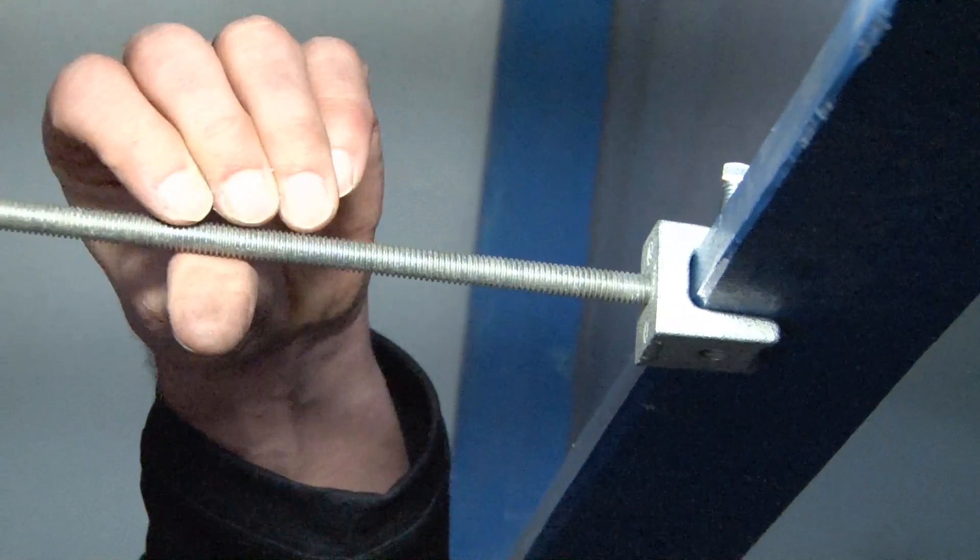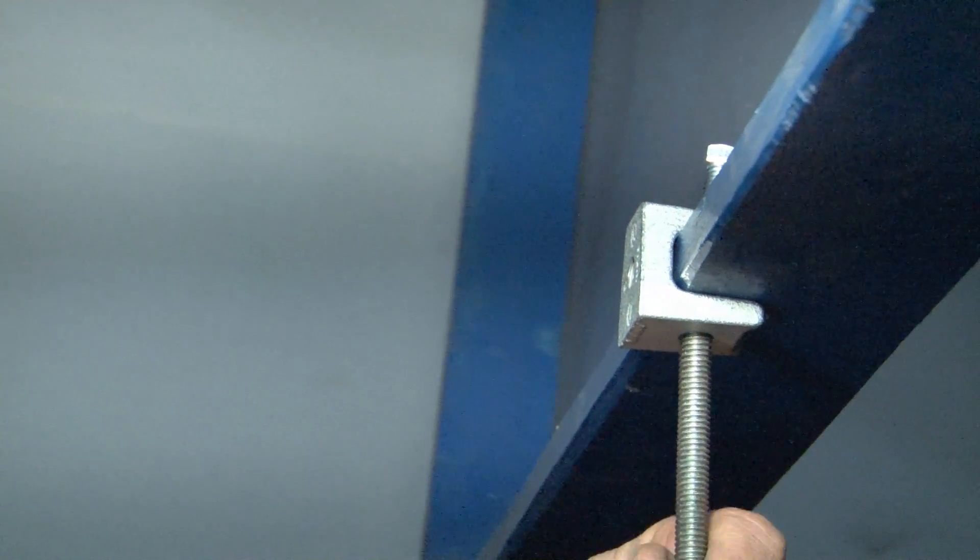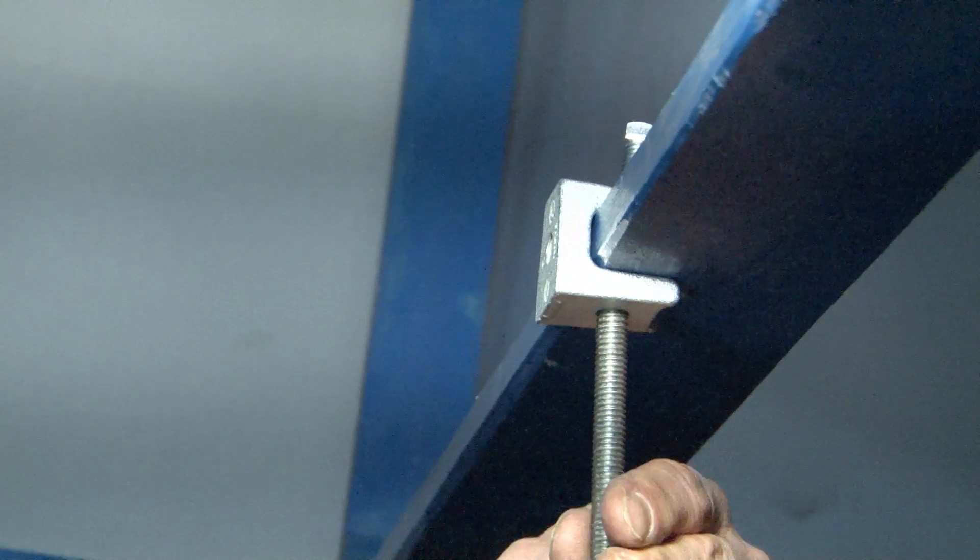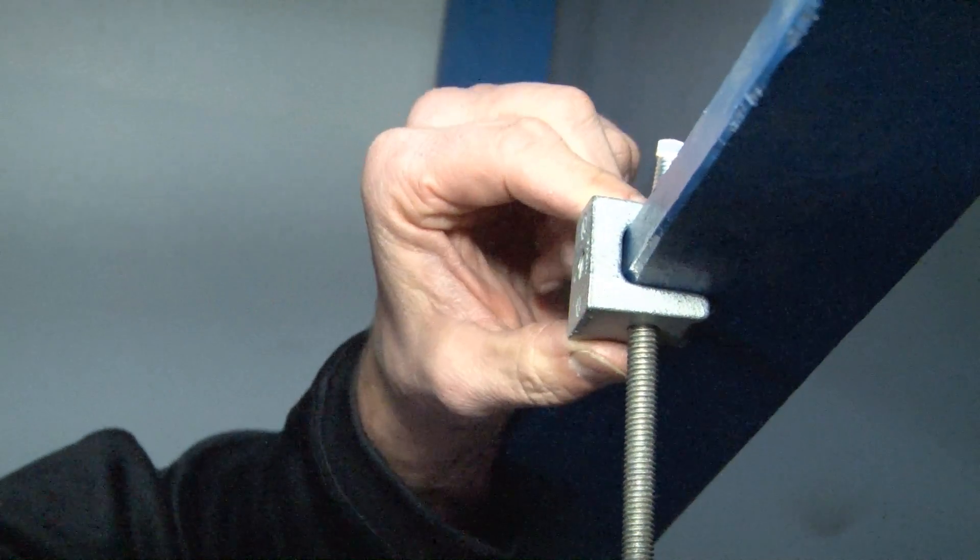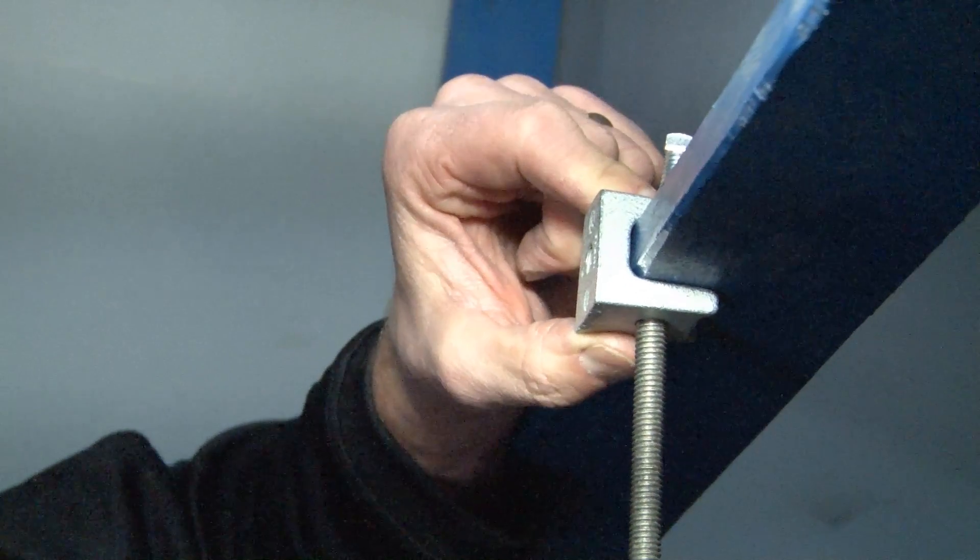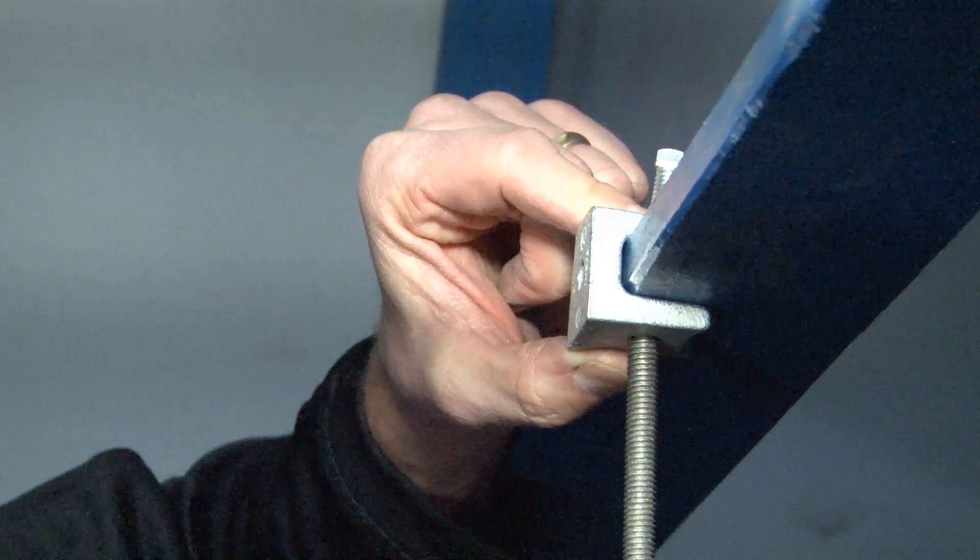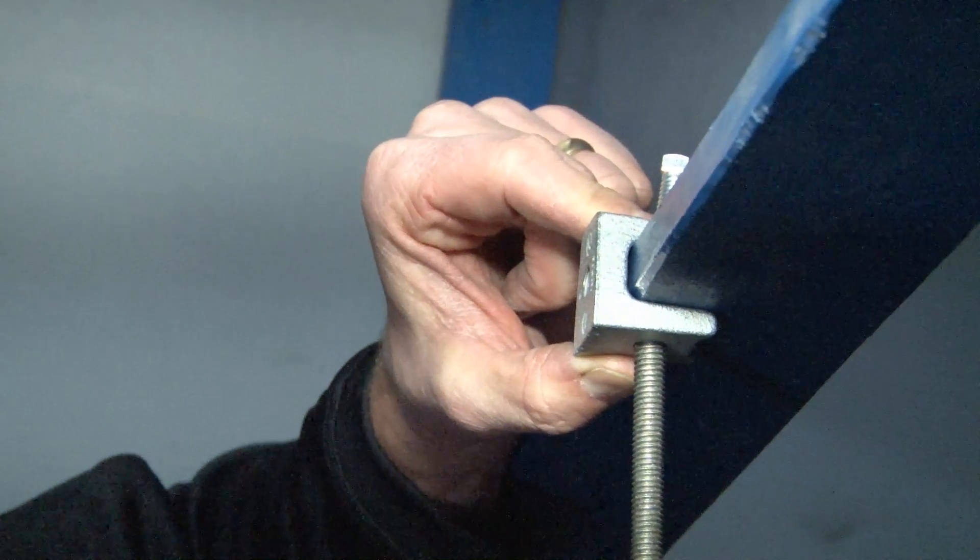The same can be done off the bottom or if you would like to install both places, that can be done as well. Again, it's an economical version of the traditional heavy duty 3/8-16 beam clamp and gets the job done on many applications.